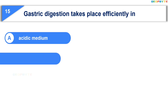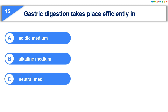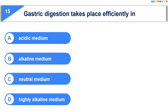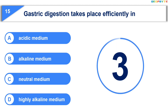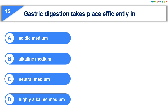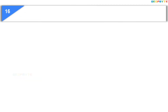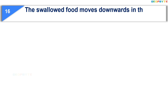The 15th question is: gastric digestion takes place efficiently in — Option A: acidic medium; Option B: alkaline medium; Option C: neutral medium; Option D: highly alkaline medium. Your time is up and the correct answer is Option A: acidic medium.